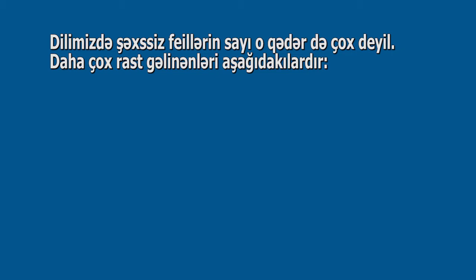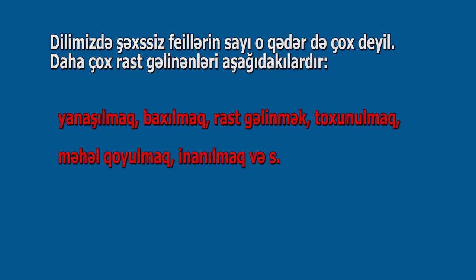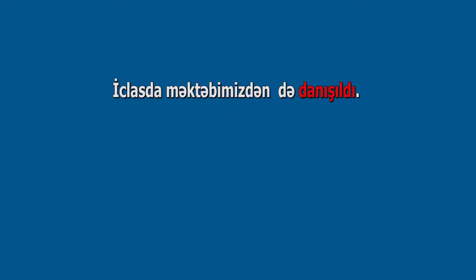Şəxsiz növ: Feylin şəxsiz növündə işlənən cümlələrdə mübtəda olmur və onu təsəvvür etmək olmur. Şəxsiz növ feyillər təsirsiz feyillərə -ıl/-il/-ul/-ül və bəzən -ın/-in/-un/-ün şəkilçilərini artırmaqla düzəlir; belə feyillər təsirsiz olaraq da qalır. Şəxsiz növ feyillər üçüncü şəxsin təkində işlənir. Dilimizdə şəxsiz feyillərin sayı o qədər də çox deyil. Daha çox rast gəlinənlər: yanaşılmaq, baxılmaq, rast gəlinmək, toxunulmaq, məhəl qoyulmaq, inanılmaq və s. Nümunələr: İclasda məktəbimizdən də danışıldı. Belə hallara tez-tez rast gəlinir. Şəxsiz feyillər daha çox rəsmi-işgüzar üslub üçün səciyyəvidir.